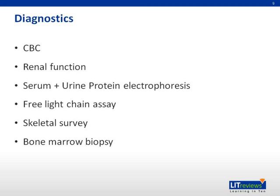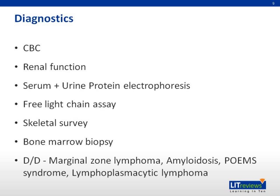Multiple myeloma has to be differentiated from other conditions where there may be a paraprotein in the blood, and these include marginal zone lymphoma, amyloidosis, POEMS syndrome, and lymphoplasmacytic lymphoma, to cite the common ones.